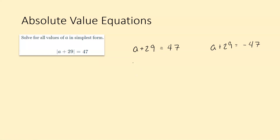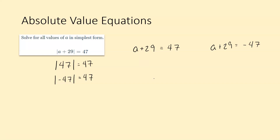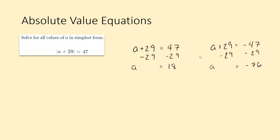Both possibilities: this could equal 47 or negative 47, because the absolute value of 47 equals 47, and the absolute value of negative 47 also equals 47. So we have to consider the possibility that a plus 29 is 47, and also that a plus 29 is negative 47. We're going to have two answers. For both of these, all you had to do was subtract 29 on both sides. You should have gotten a equals 18 and a equals negative 76.